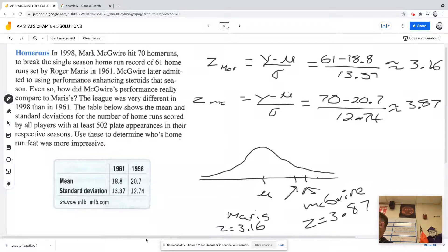There's a lot of contributing factors. They played more games in 1998 than they did in 1961, so they had more opportunities at bat. This is a little bit ambiguous, it says at least 502 plate appearances. So I don't know exactly how many plate appearances McGwire had compared to Maris.